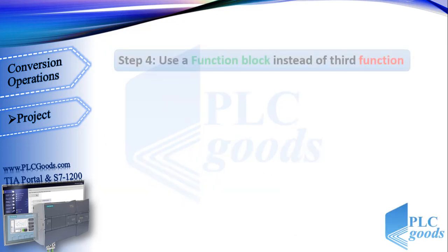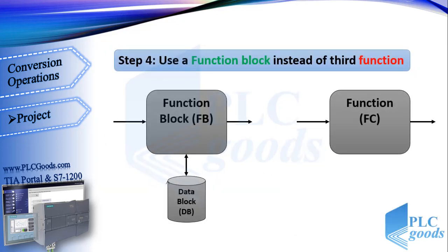Functions and function blocks both have inputs and outputs, but what is their difference? The CPU does not store anything when exiting from a function. A function block, however, has a data block and can store its data. So when the CPU starts again, the function block uses its previously stored data.